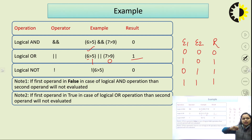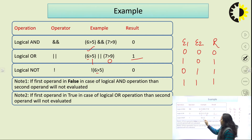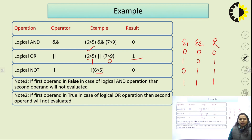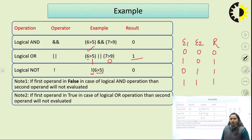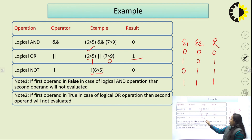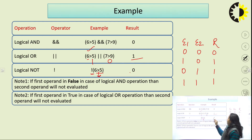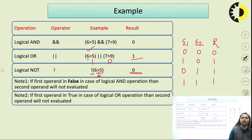Logical NOT says whatever result we are getting from the expression, just revert it. If 6 is greater than 5, the result is 1 — it is true. But when we apply logical NOT, it will revert the answer. So whatever the result of the expression is true, it will yield the final result as false. That is logical NOT — it reverts the result.